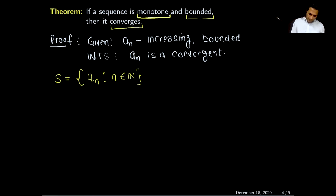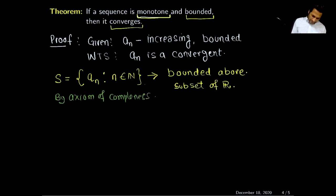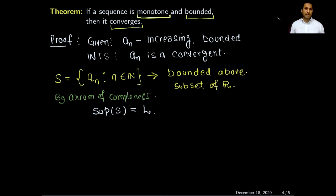Since S is a bounded above subset of the real numbers, by the axiom of completeness the supremum of S exists, and I denote it by l, where l is a real number. So sup(S) exists and equals l.